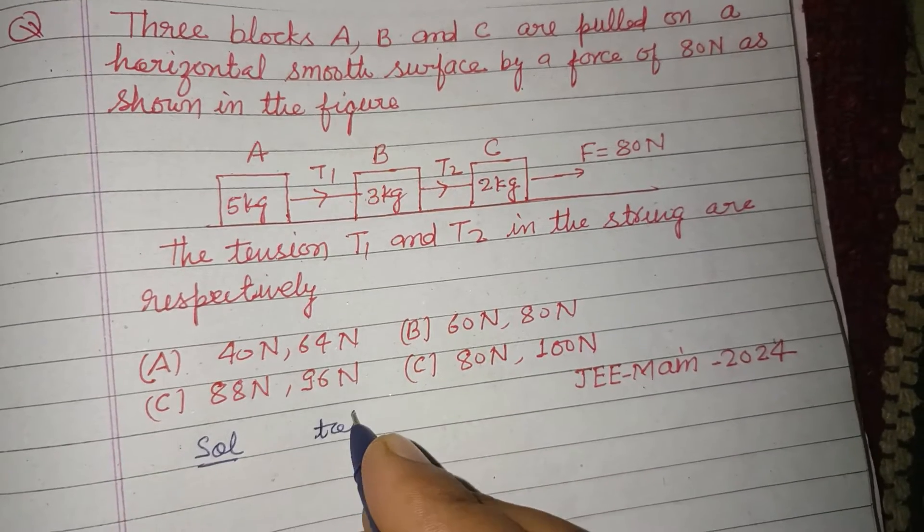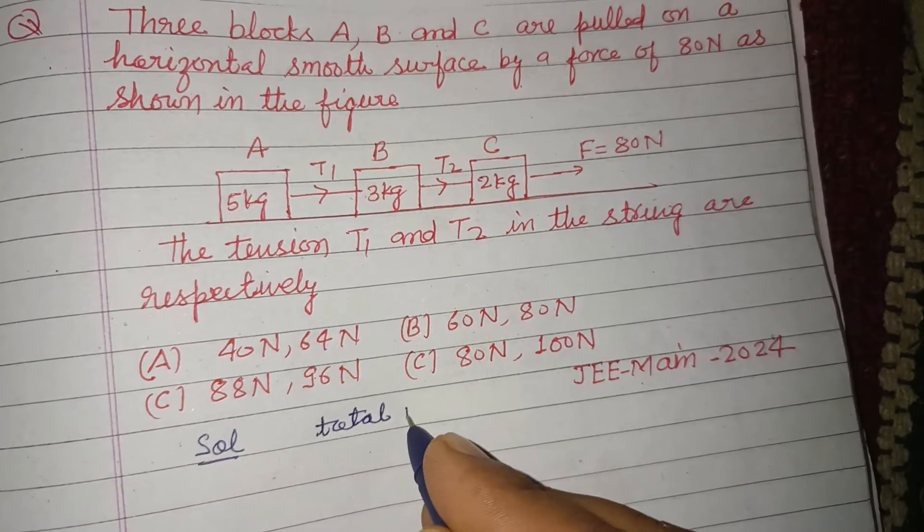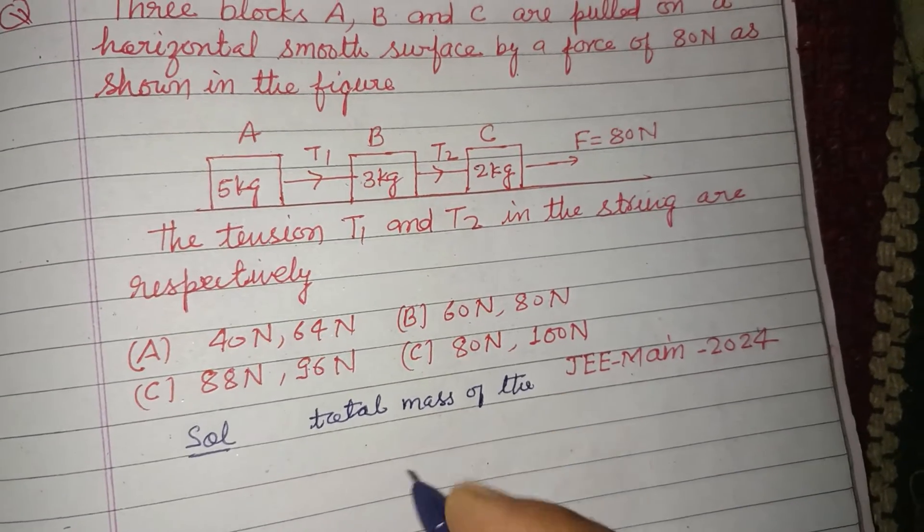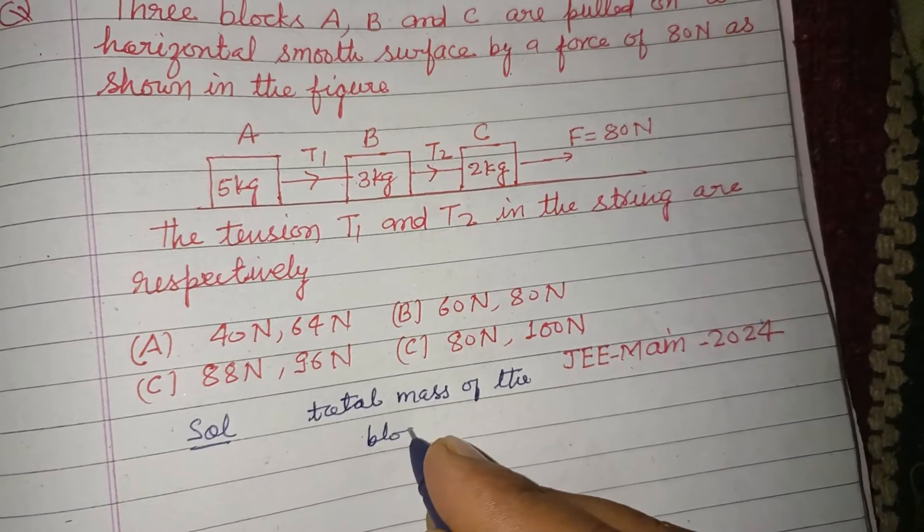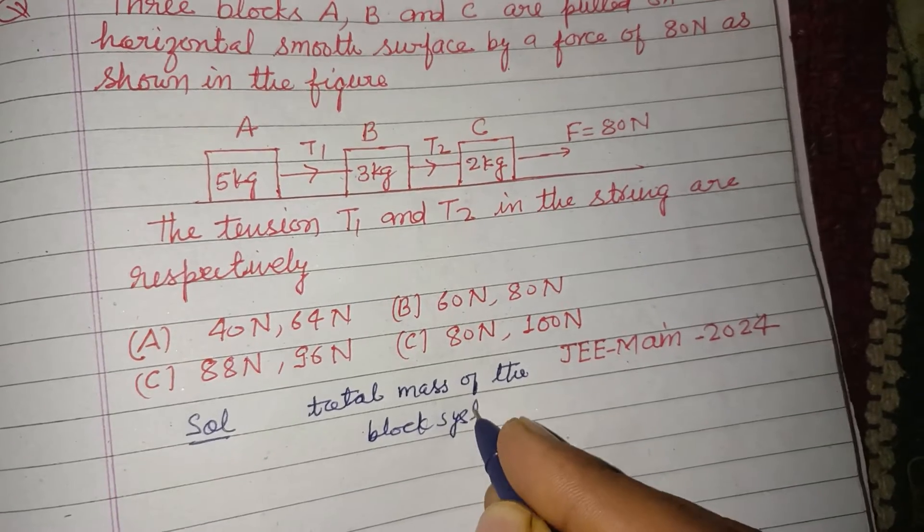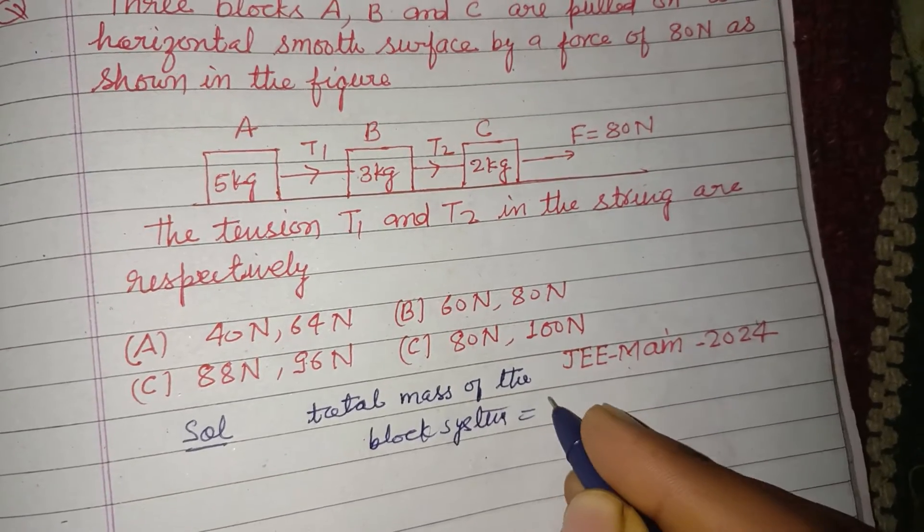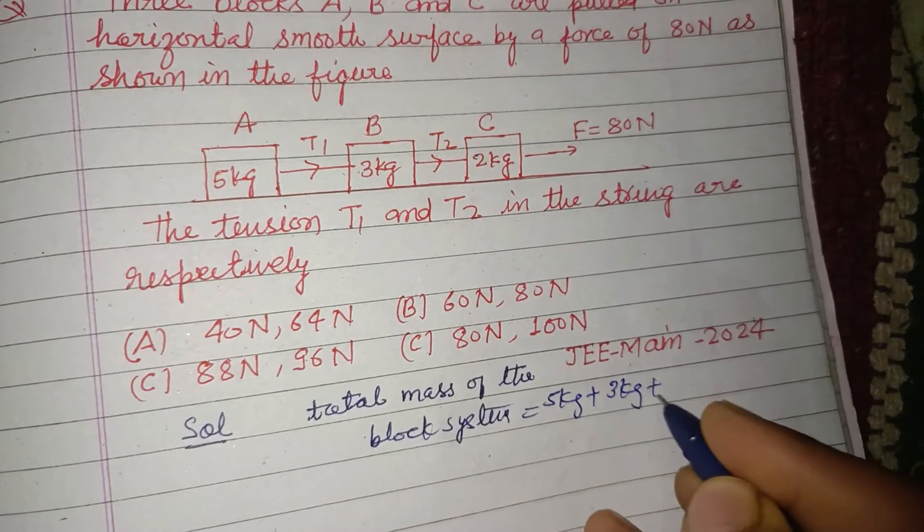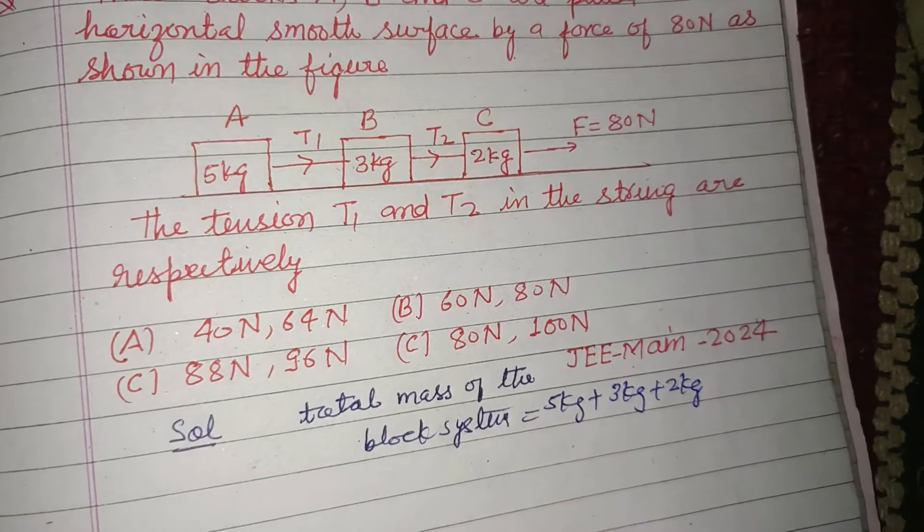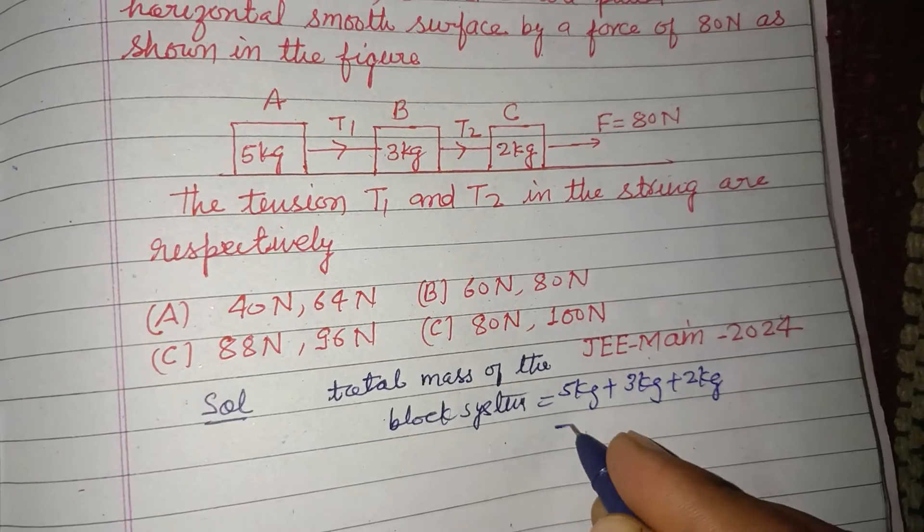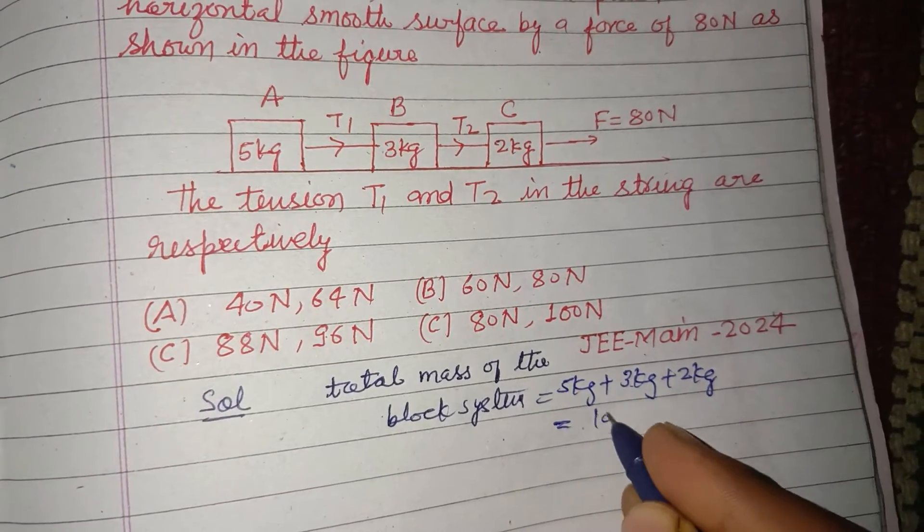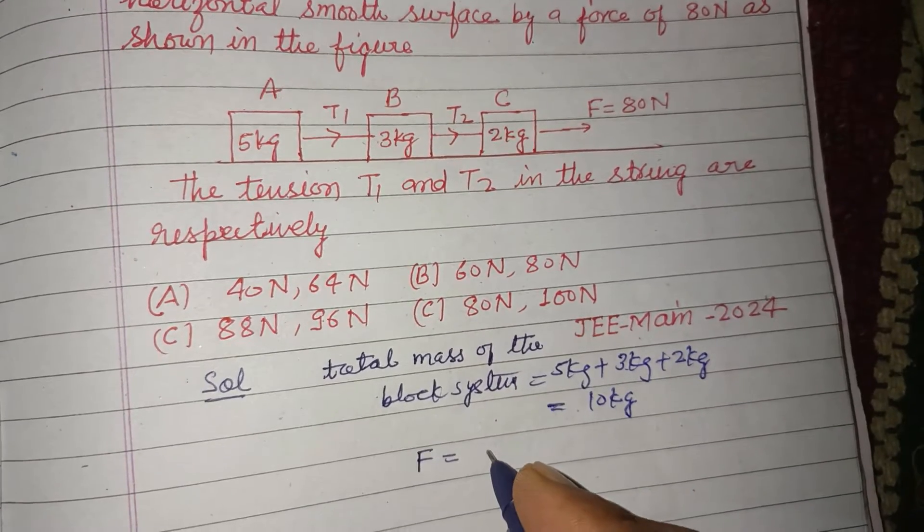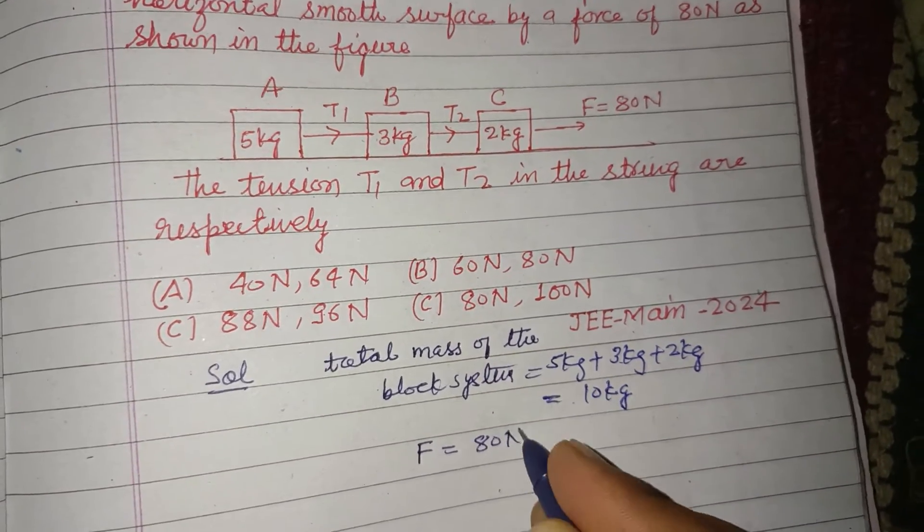Take the total mass of the system. Total mass of the three block system is 5 kg plus 3 kg plus 2 kg, which is 10 kg. The force acting on the system is 80 Newton, therefore...